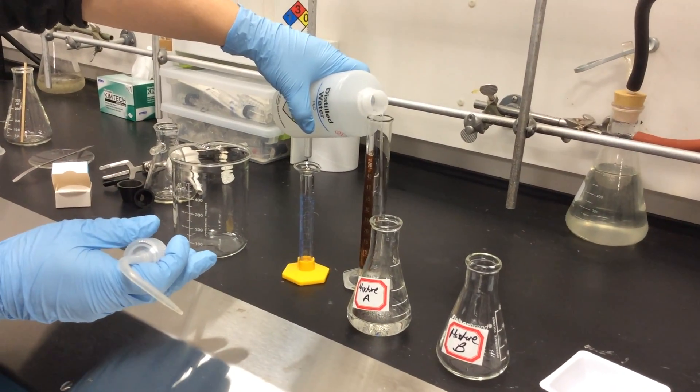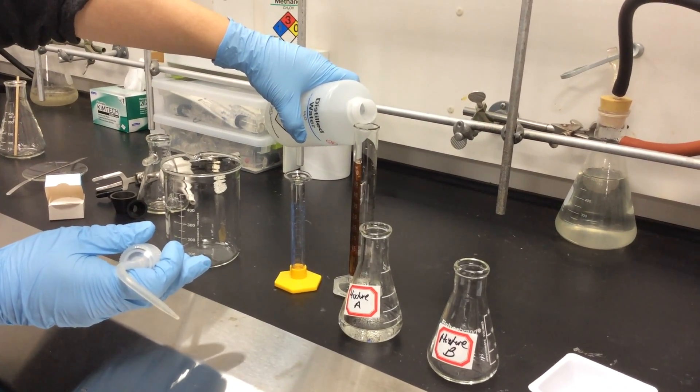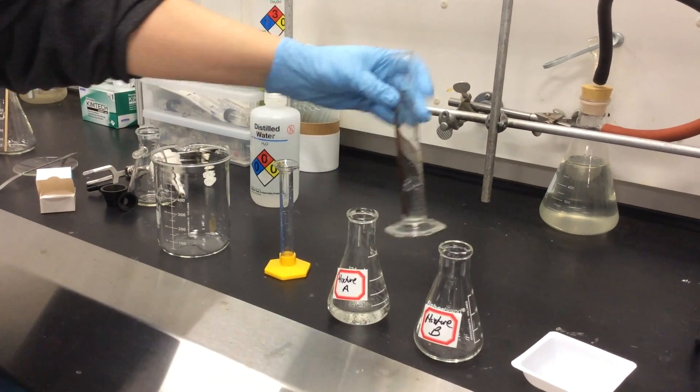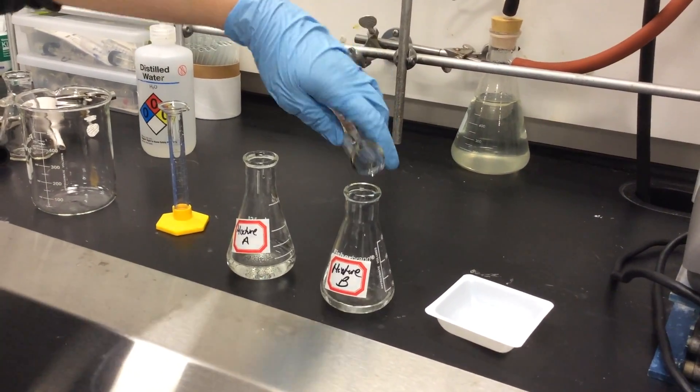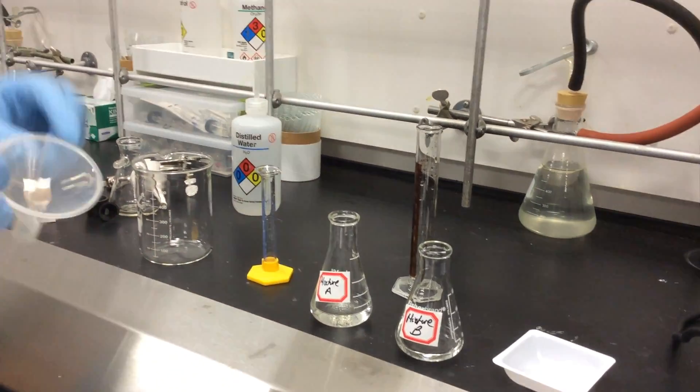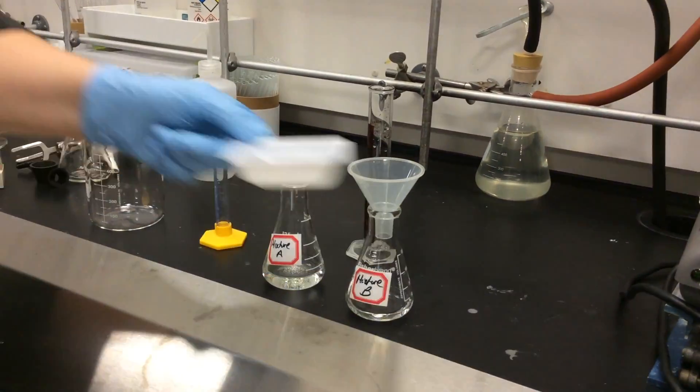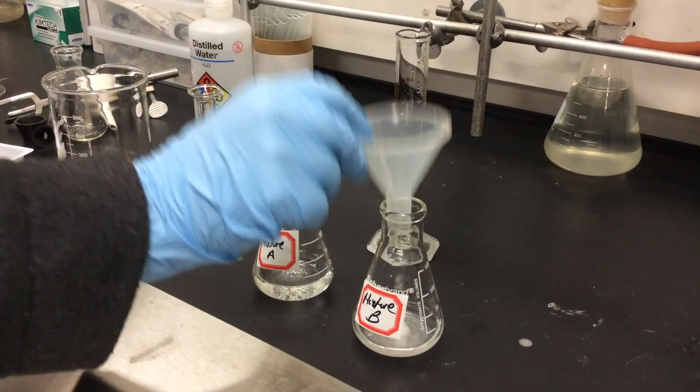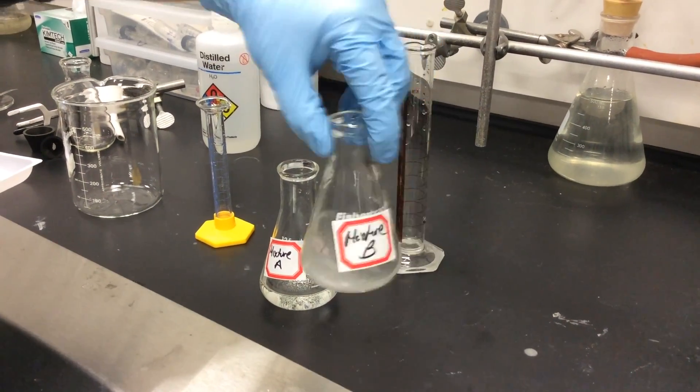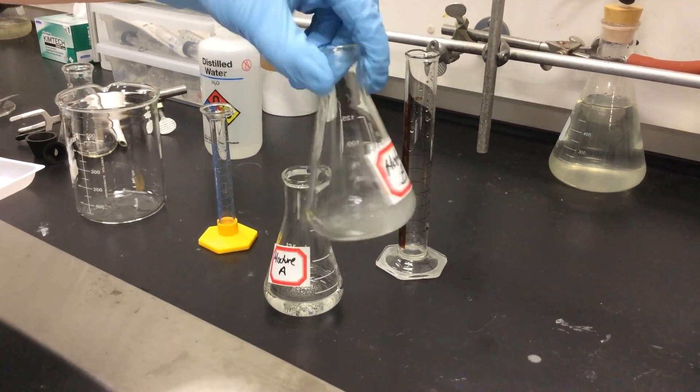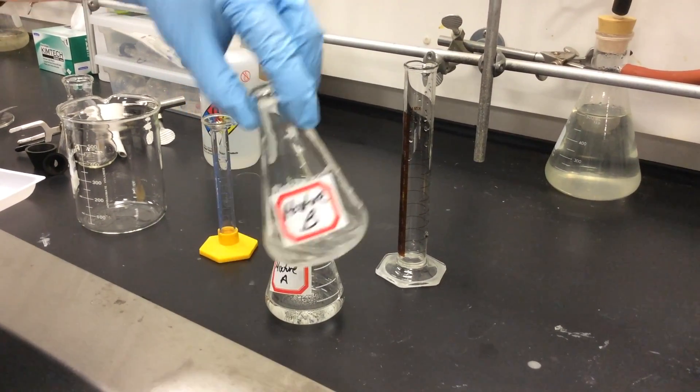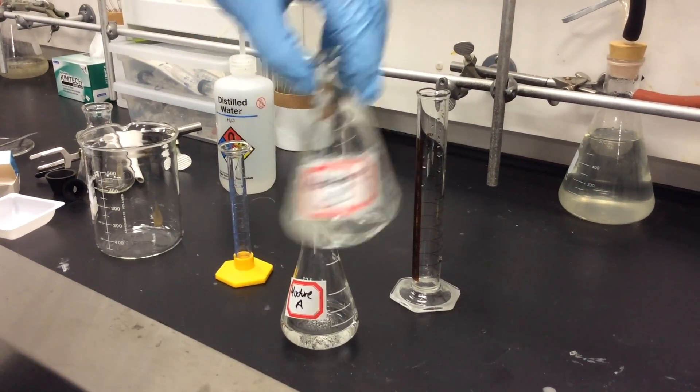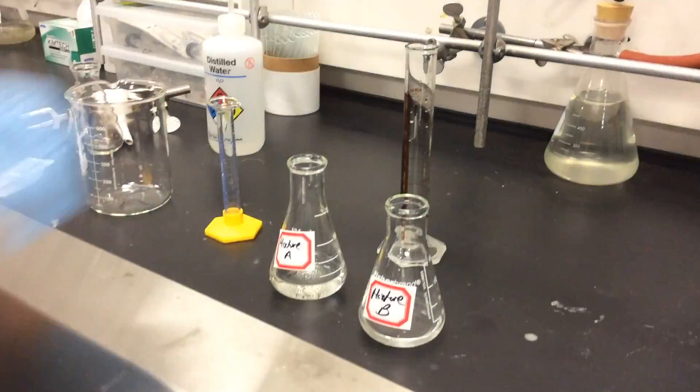Now we're going to put 15 milliliters of water into our graduated cylinder, pour that into the mixture B flask. Now we're going to get our powder funnel, which is a funnel we can use to put our 2.4 grams of anhydrous sodium acetate into our flask. Water and the acetate we will mix together. Once that is mixed and all the sodium acetate has been dissolved, you can do this just by vigorously shaking it like you see here.